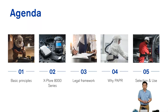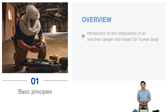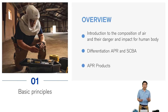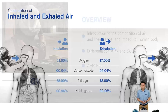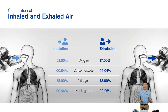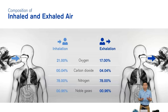On basic principles, we will touch on the introduction to the composition of air, the danger and impact of contaminants to our body, followed by APR and the difference between APR and SCBA. The normal air we breathe is composed of 21% oxygen. After we breathe out, we take away 4%. During breathing, if there are any contaminants in the air — whether gases or aerosol particles — they might be captured into our lungs.